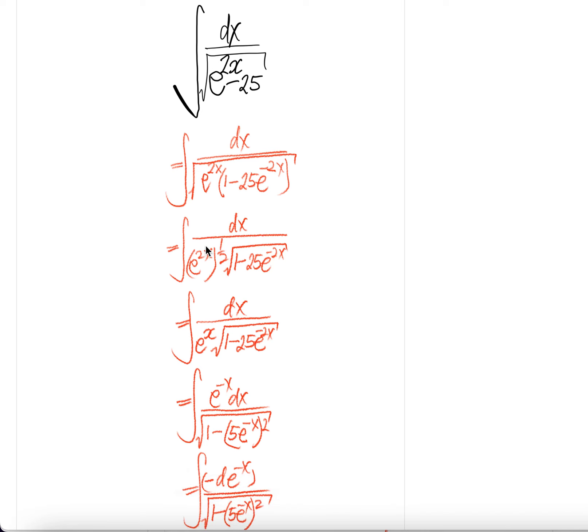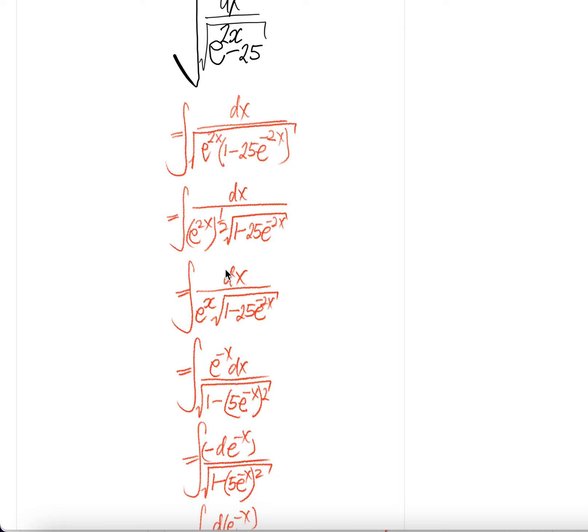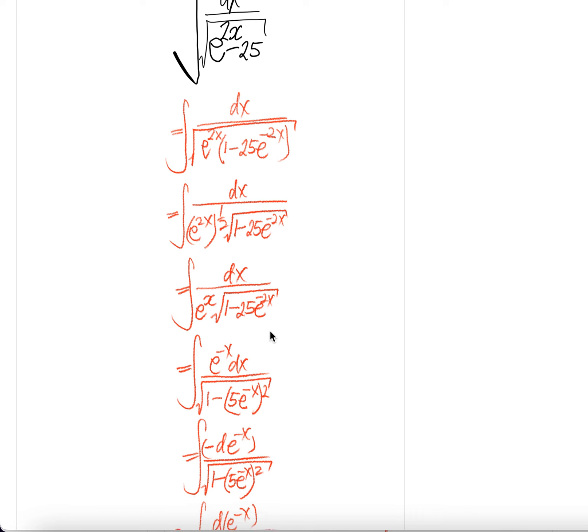So bring this out, you get e to the power 2x to the power half, and then the remainder here is square root 1 minus 25 e to the power 2x. And then 2 and 2 cancel, you get e to the power x square root 1 minus 25 e to the power negative 2x.